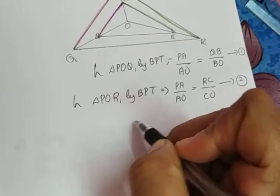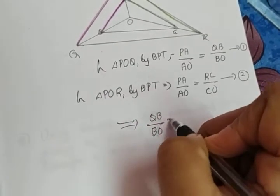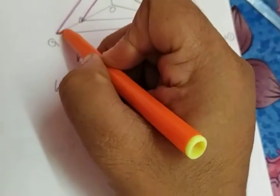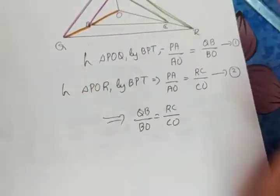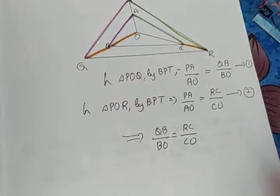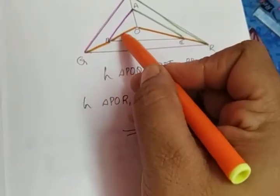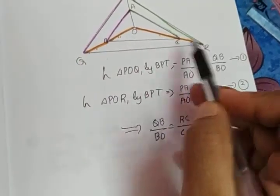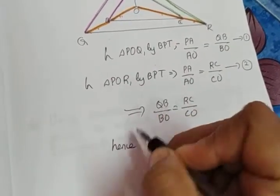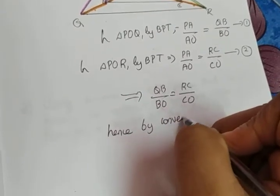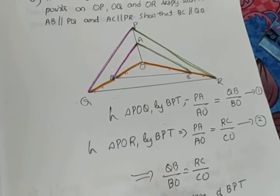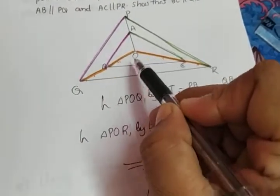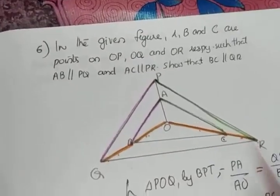Comparing equations 1 and 2, since the LHS is equal, this implies QB by BO is equal to RC by CO. QB is this segment, BO is this one, RC is this one, and CO is this line. So the ratio of these two sides is equal to the ratio of these two sides, meaning the line connecting B and C will be parallel to the third side QR. Hence, by the converse of BPT, BC is parallel to QR — and that was what we had to prove. Hence proved.